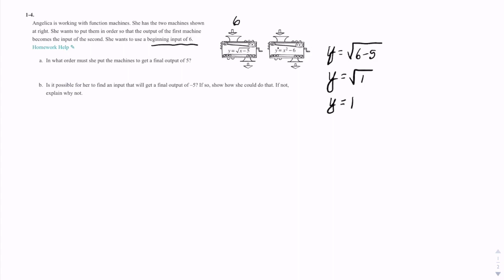What comes out of this machine is 1. Now if we feed that 1 into the next machine, again, what goes into the machine is the x value. I'm going to put a 1 in for x here. So the function is y equals x squared minus 6. With a 1, that would be 1 squared minus 6. So y equals 1 squared is 1 minus 6.